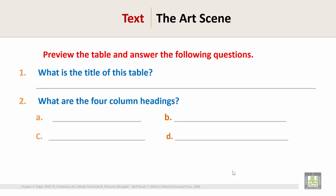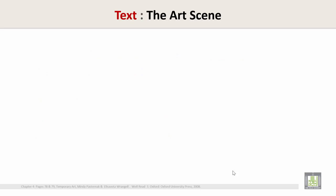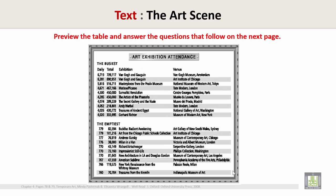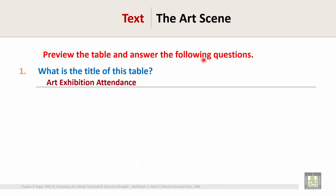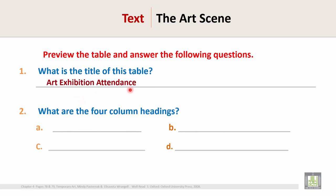To answer Question 1: What is the title of this table? The title is here — 'Art Exhibition Attendance.' So write in the answer: Art Exhibition Attendance. Now Question 2: What are the four column headings? Look at the table and find out the four column headings.